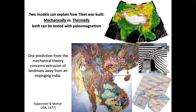The two models of how Tibet gets formed are end members: you can do it mechanically — double the thickness of the crust, make faults — or thermally, putting a big thermal anomaly there to make it buoyant. This is kind of a French versus English approach. Both can be tested with paleomag. If we see no large-scale deformation creating offset, that favors the thermal model, or we can test the mechanical part.